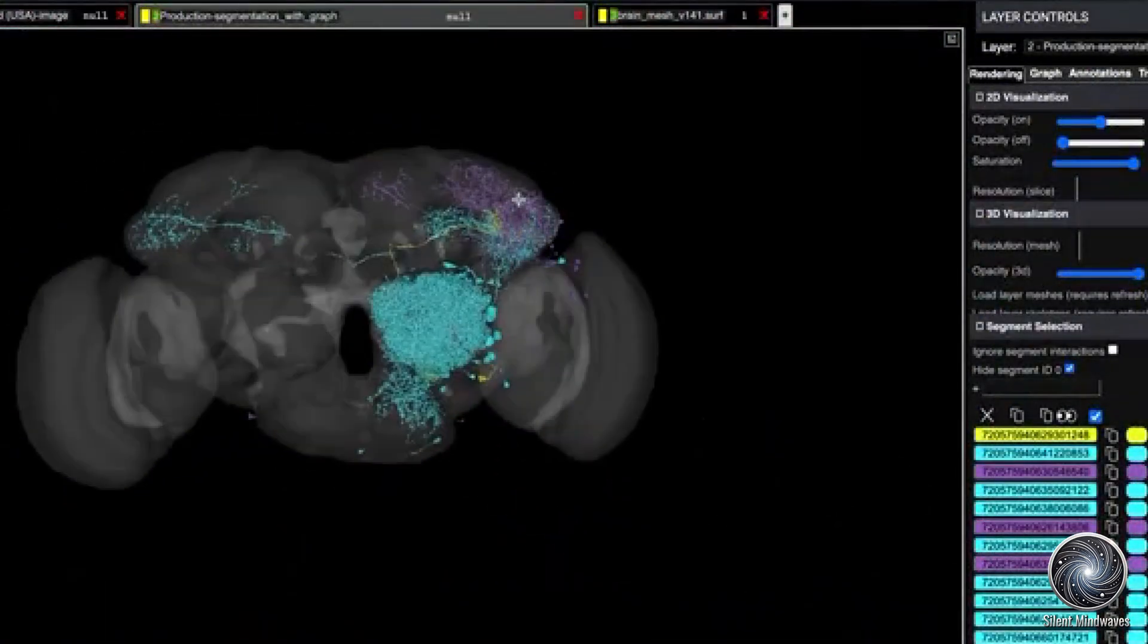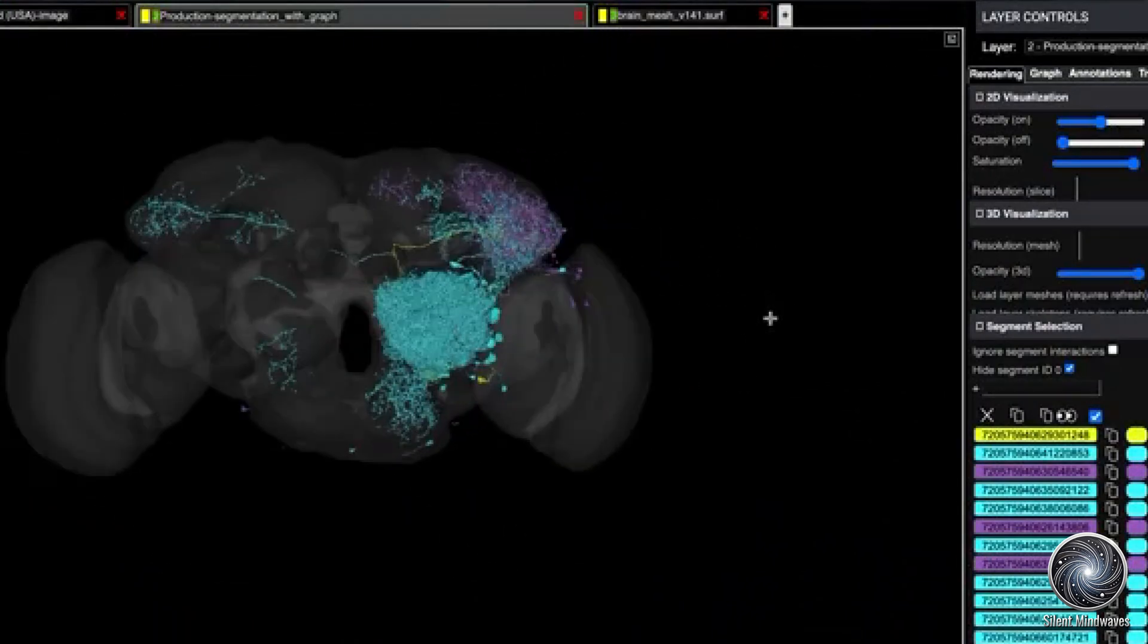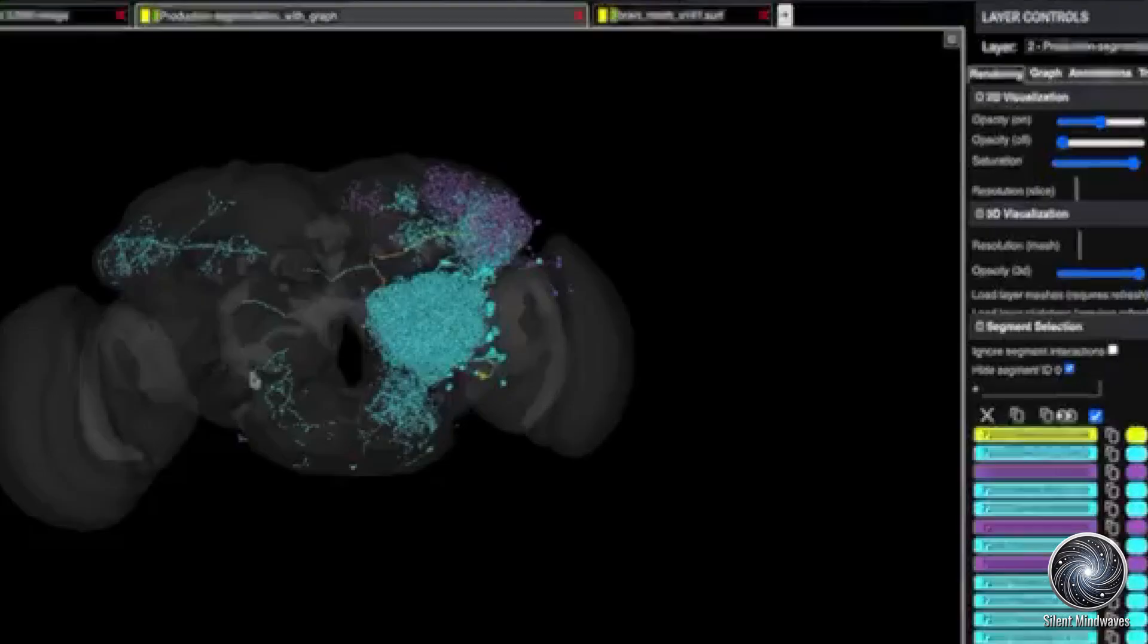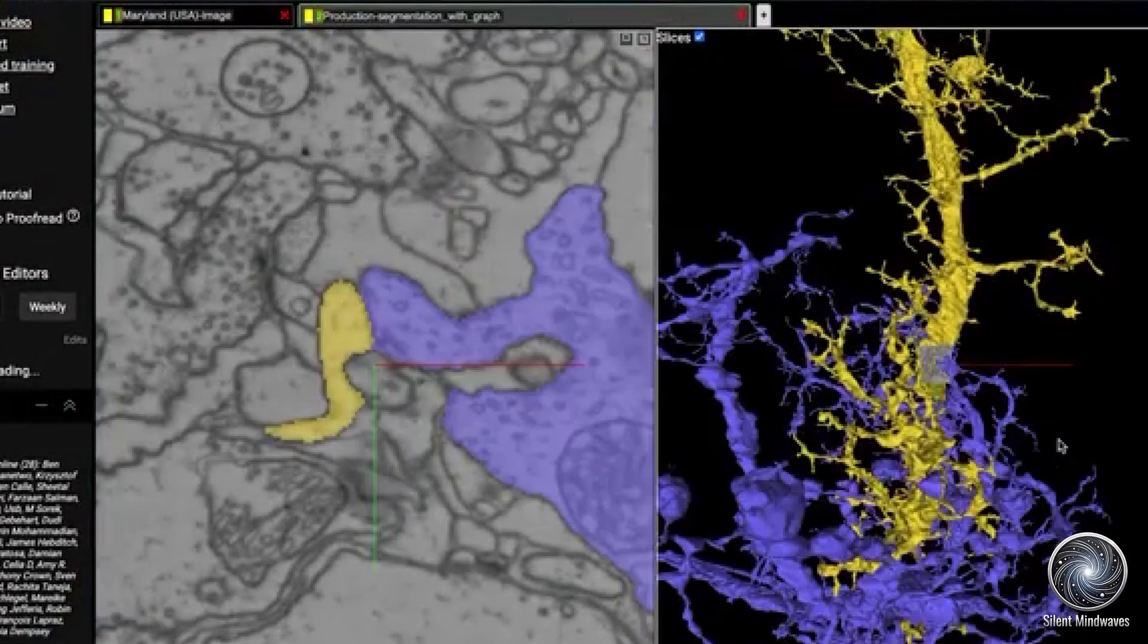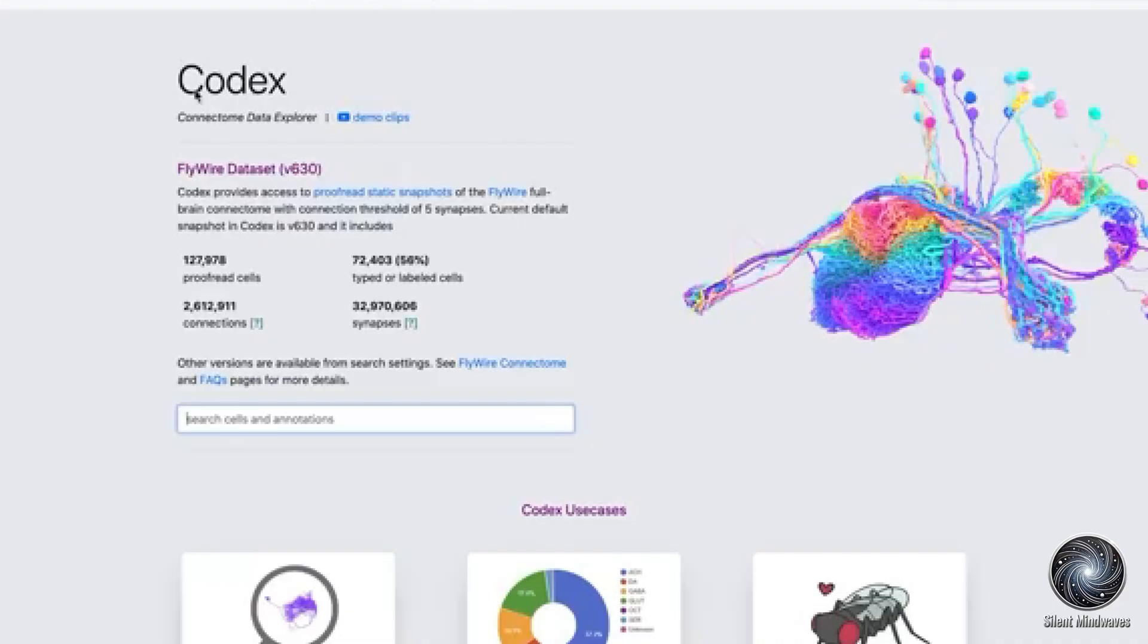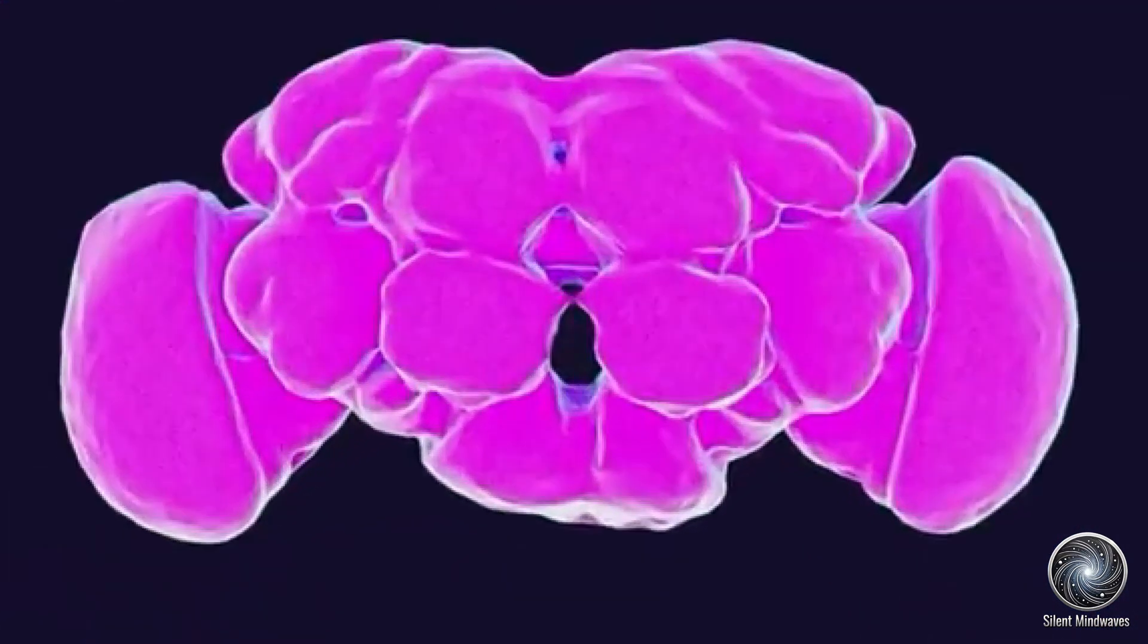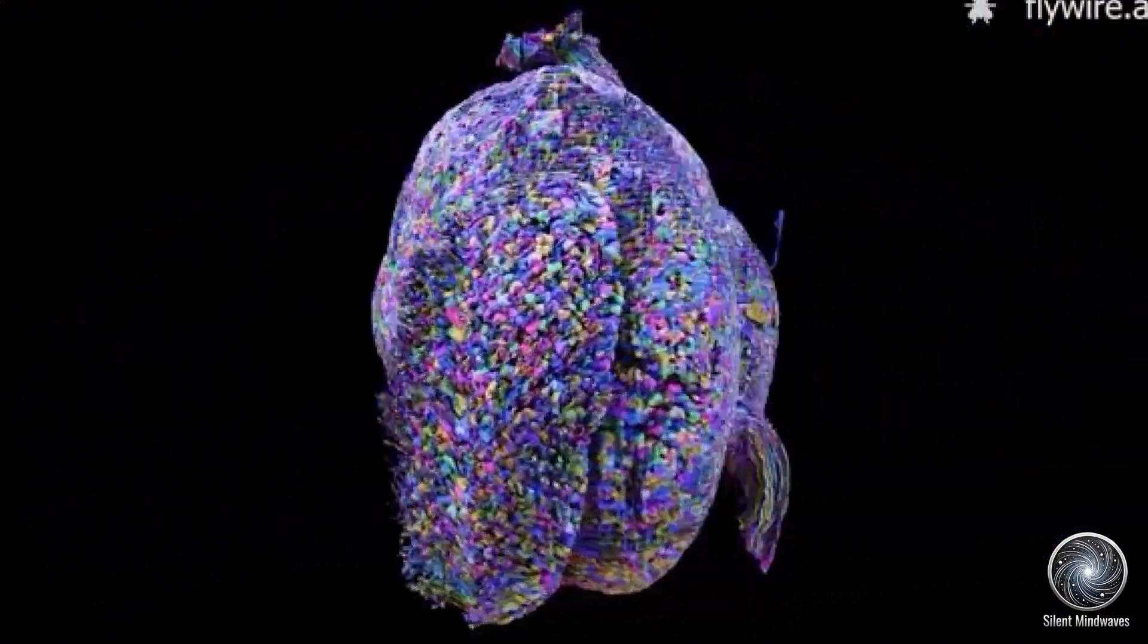Each volunteer meticulously examined the neural pathways, ensuring accuracy at every level. The fly's brain, despite its small size no bigger than a poppy seed, revealed a staggering complexity. The mapping showed that its neurons were organized into distinct clusters, each responsible for different functions, much like the human brain.